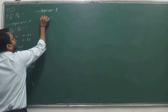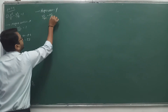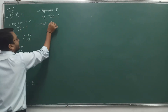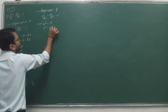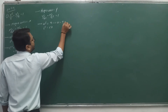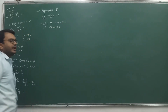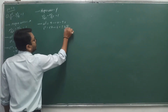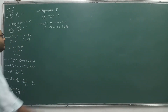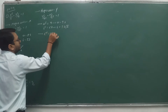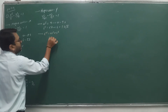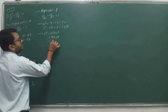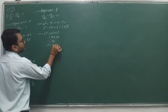Standard equation: y²/a² minus x²/b² = 1. So a² = 9 and b² = 27. Therefore a = ±3 and b = ±3√3. Then c² = a² + b² = 9 + 27 = 36, so c = ±6.